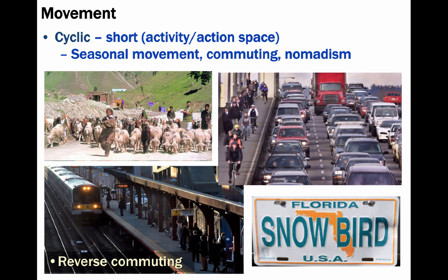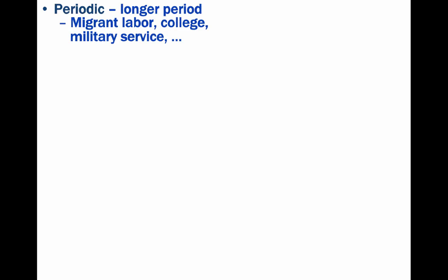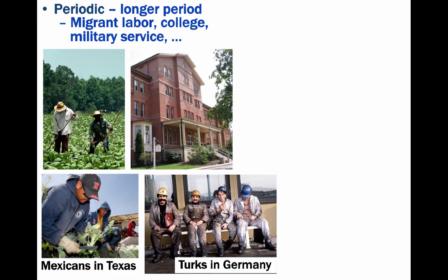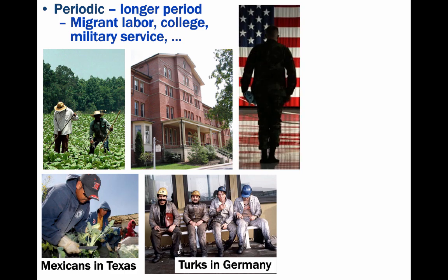Nomadism is dwindling across the world, but it can still be found in parts of Asia and Africa. Periodic movement, like cyclic movement, involves returning home, but periodic movement involves a longer period of time away from the home base. A common type of periodic movement is migrant labor. For example, there are millions of workers in the United States and tens of millions worldwide, such as Mexicans in Texas or Turks in Germany. There are also millions of students who stay at dorms or apartments when off at college, and military service, where people can be stationed for months at a time but then come home.